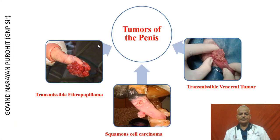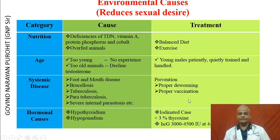Transmissible fibropapilloma, transmissible venereal tumor, and squamous cell carcinoma can be seen in images. Environmental causes such as nutrition are important: deficiencies of vitamin E, vitamin A, protein, phosphorus, and cobalt may result in low sexual desire. Overfed animals which are not exercised and become obese may also have low sexual desire.